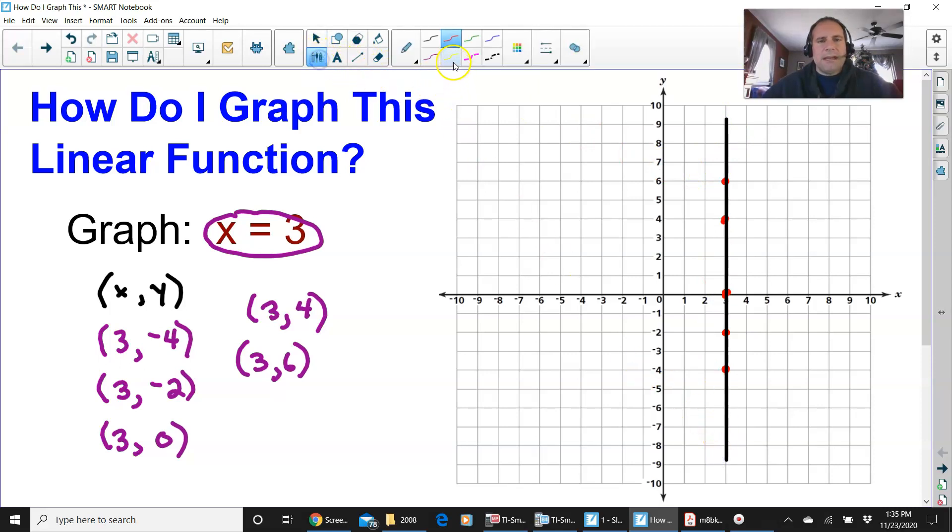Remember, anytime that you graph a line, you have arrows, put your arrows, and you could even just put your x equals, this is x equals 3. That line is a vertical line. This is a vertical line. And the slope, which is the m, is undefined. Vertical lines have an undefined slope.